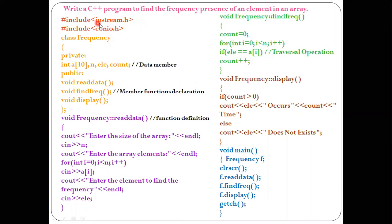The first two lines are header files. Hash include with angular brackets — iostream.h stands for input output stream header file, used exclusively for cout and cin. The second one, conio.h, stands for console input output header file, used for the clrscr and getch functions.